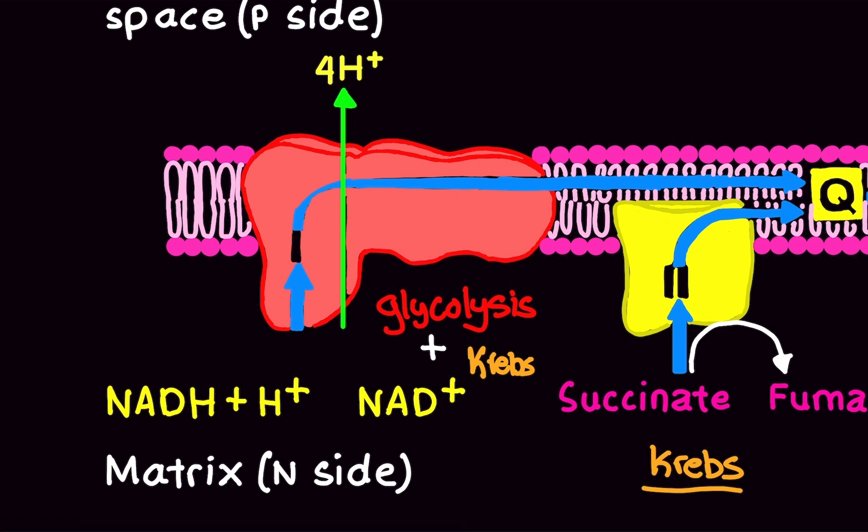And when this happens, it supercharges Complex 1. And what happens is these protons that are sitting in the matrix are going to get pumped into the inner membrane space because the Complex 1 is supercharged. It's like charging up a battery. And when the battery is charged up, protons can willingly move from the matrix into the inner membrane space. That is Complex 1 in the most basic form.